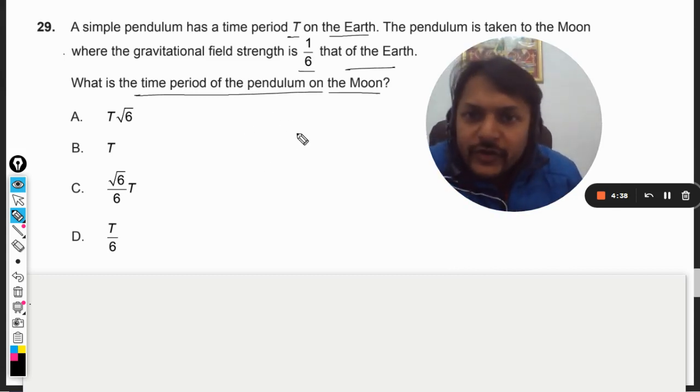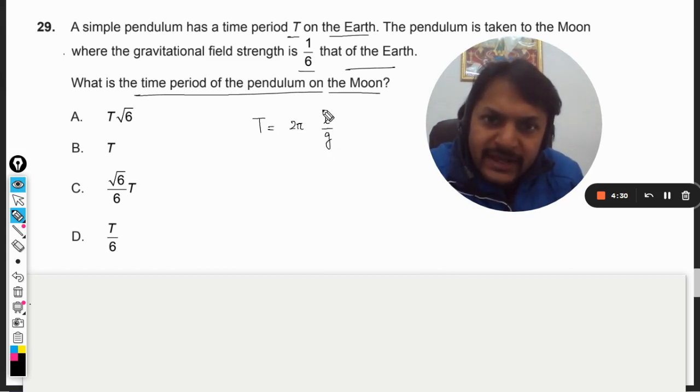So for this, first of all we must know the formula for the time period of a pendulum, and it is given by 2π root of L by G.